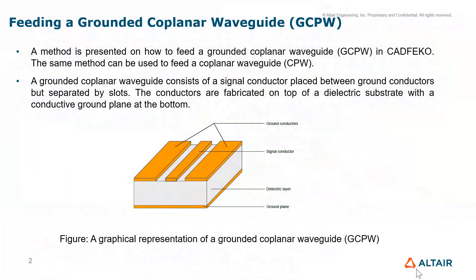In this video we are going to discuss a method on how to feed a coplanar waveguide using FEKO. The same method can be used for coplanar waveguide or microstrip lines. A coplanar waveguide consists of a signal conductor placed between the ground conductors, separated by slots, and fabricated on top of a dielectric substrate with a conductive ground plane at the bottom.